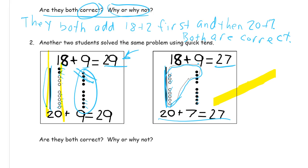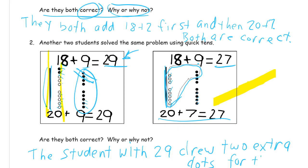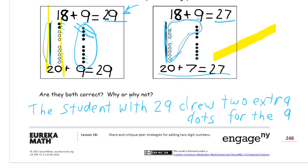The student with 29 drew two extra dots for the 9 and is wrong.